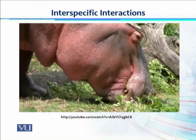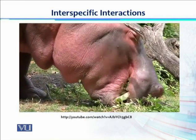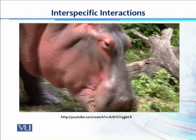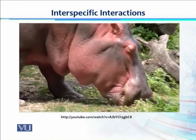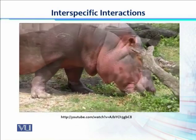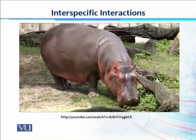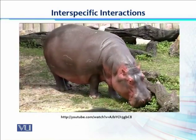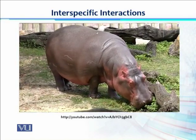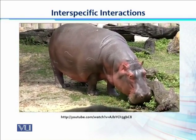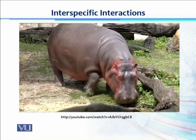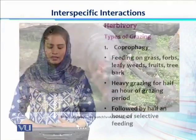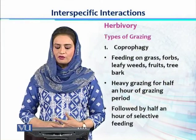Let's see the feeding strategy of a hippo, which is a big vertebrate. Although it is really big, its food is only plants. It is not killing all the plants; it eats only a part of the plant and leaves the rest to regrow.